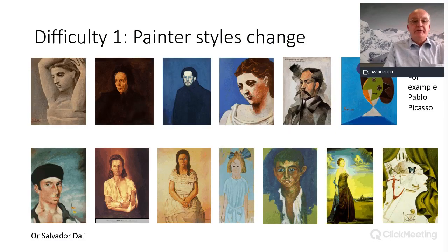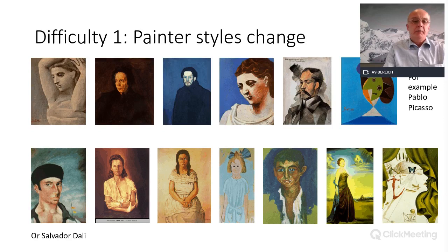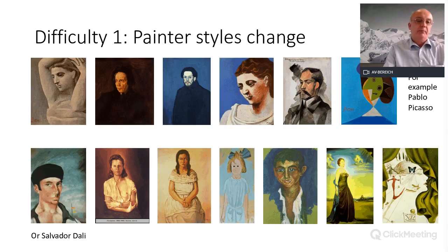There are various difficulties. The first is that the style of painters changes during their lifetime. In the upper row you can see images of Pablo Picasso — the one to the very right is clearly a Picasso everybody would recognize, but the first or second you wouldn't necessarily associate with Picasso. The same is true for Salvador Dali and others.